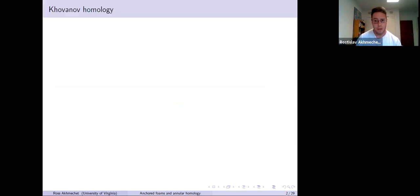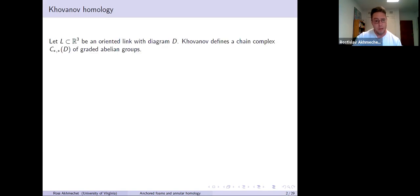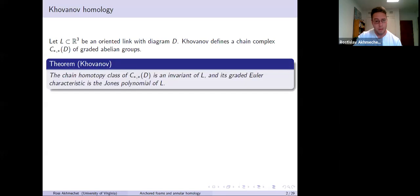I'll start by saying a couple words about Khovanov homology. So here's the setup. Let L in three-space be an oriented link with some diagram D. Khovanov defines a chain complex of graded abelian groups, so there's a homological as well as an internal grading. The main theorem is the following: the chain homotopy class of this complex is an invariant of the link, and its graded Euler characteristic is the Jones polynomial.